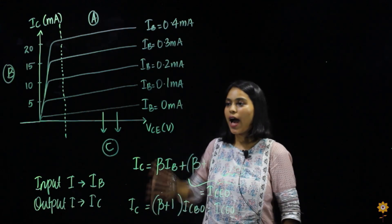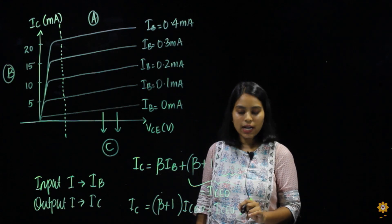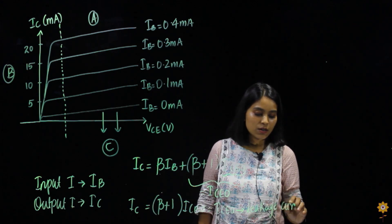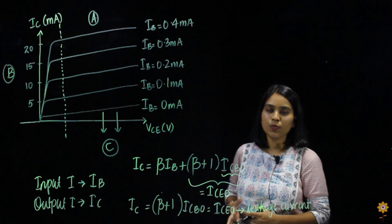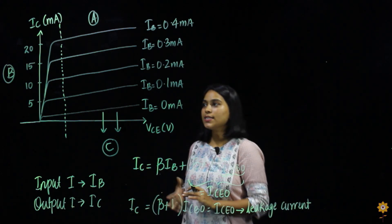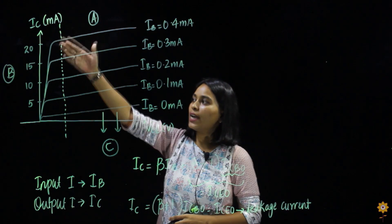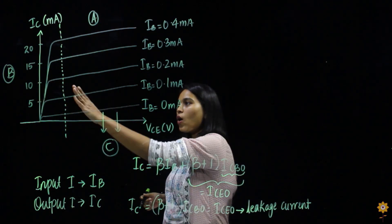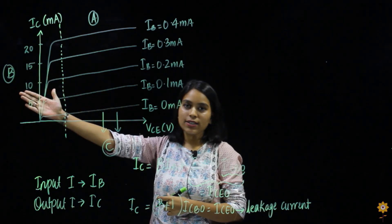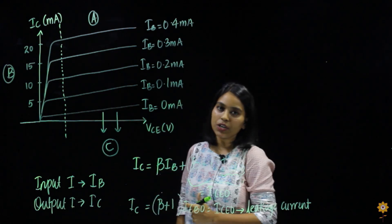So when IB is equal to 0, we still have this term ICEO present, which is nothing but reverse saturation current — also called leakage current. So even when no input current is present there is some leakage current on the output side. Now the output characteristics can be divided into three different regions. I have drawn a dotted line separating these parts: region A on the right, region B on the left beyond the dotted line, and region C below IB equal to 0.